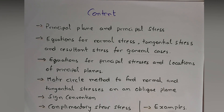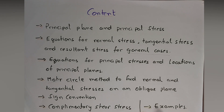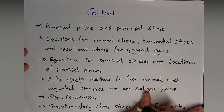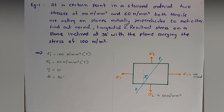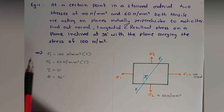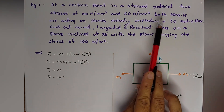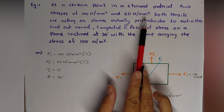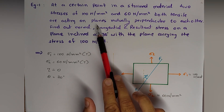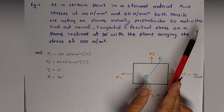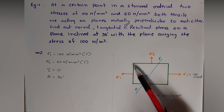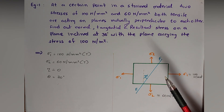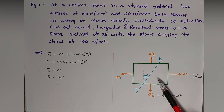From today, that is from the seventh part, we'll start with the examples. This is the first example we are going to study. At a certain point in a strained material, two stresses — 100 N/mm² and 60 N/mm², both tensile — are acting on planes mutually perpendicular to each other.